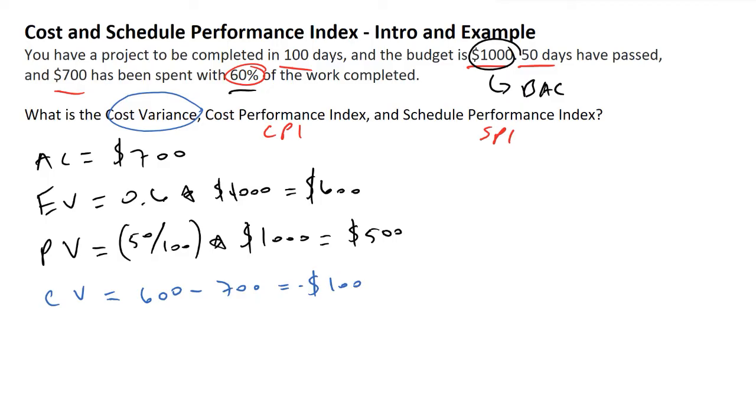The next term we're going to be looking at is called our cost performance index, or CPI. CPI is equal to the earned value divided by the actual cost. So we're going to have EV divided by AC, and this is equal to 600 divided by 700, and this is equal to 86%.